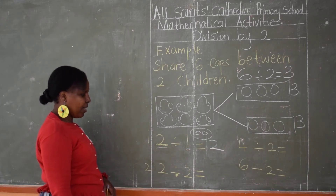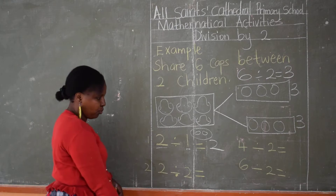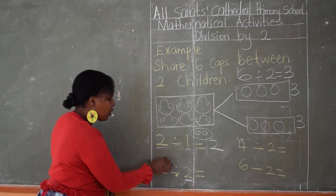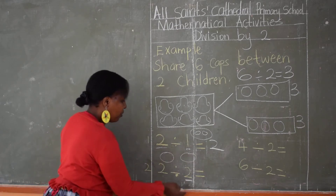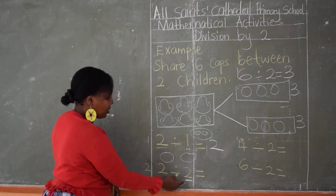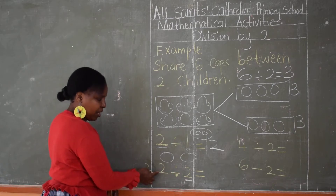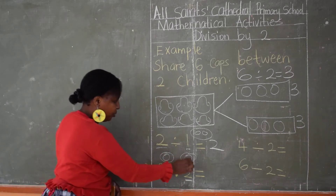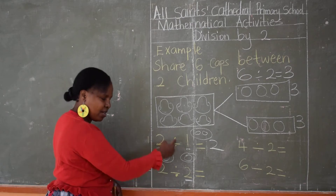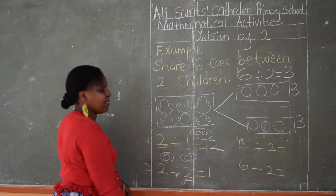We go to our next example. Remember, we are doing division by two. Two divided by two. How many groups are we going to create? Two groups. We have maybe two apples and we have two children, so we share equally. We count up to two — one, two. Each person will get how many? One. Remember, division is equal sharing. Two divided by two, our answer is one.